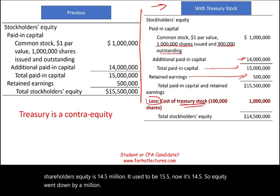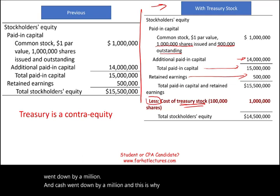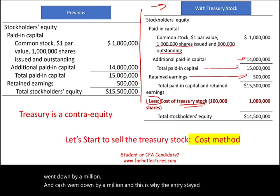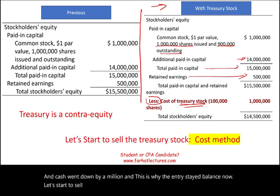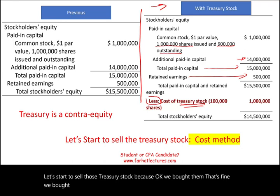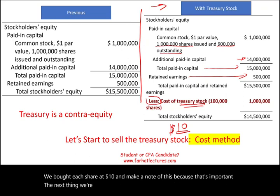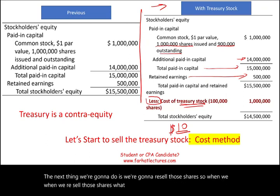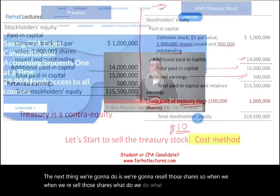Cash also went down by $1 million, which is why the entry stays in balance. Now let's look at selling that treasury stock. We bought each share at $10 — make note of that cost — and now we're going to resell those shares back to the public.